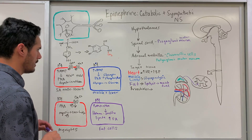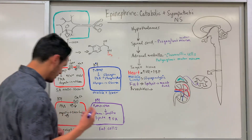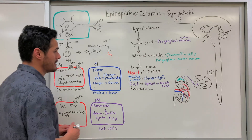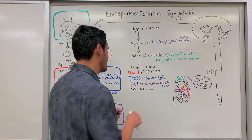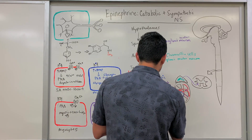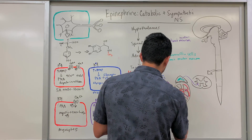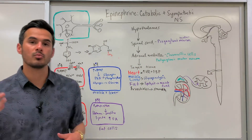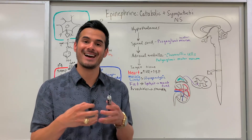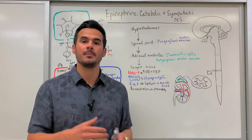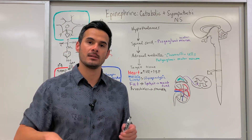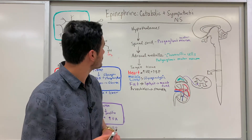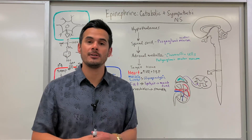Finally, for the bronchioles, we won't go into the specific mechanism, but the smooth muscles on those bronchioles respond when epinephrine and norepinephrine bind to receptors there — those airways dilate. Once they dilate, more air is allowed into the lungs so the oxygenation process can occur. And that's going to do it for epinephrine.